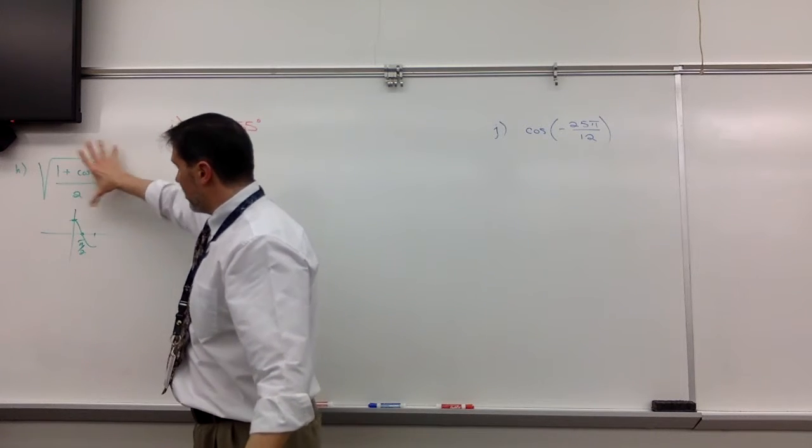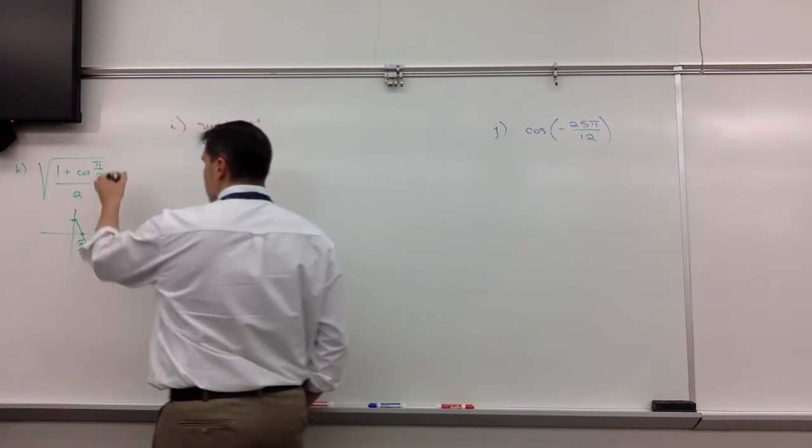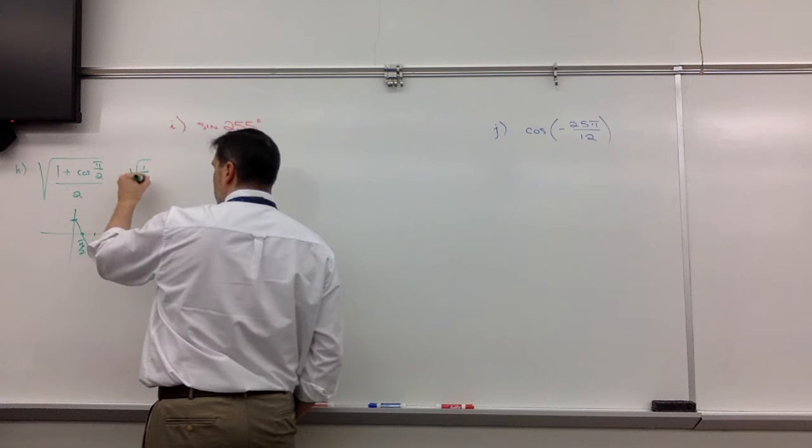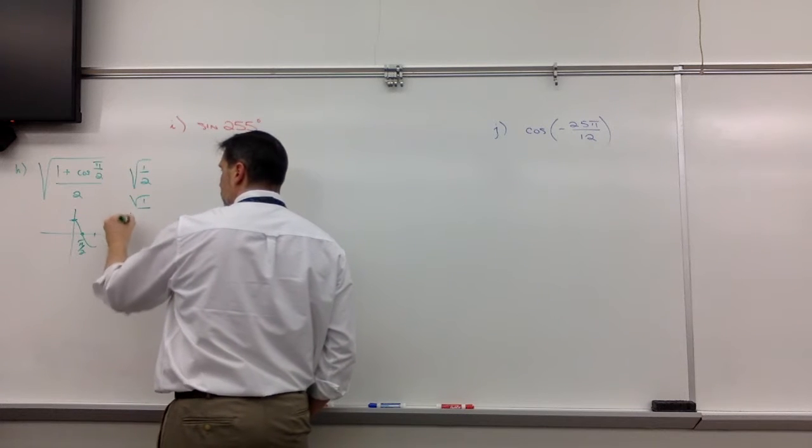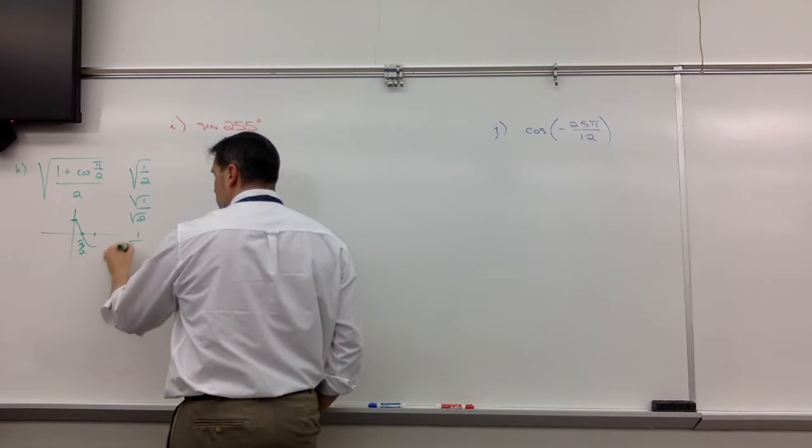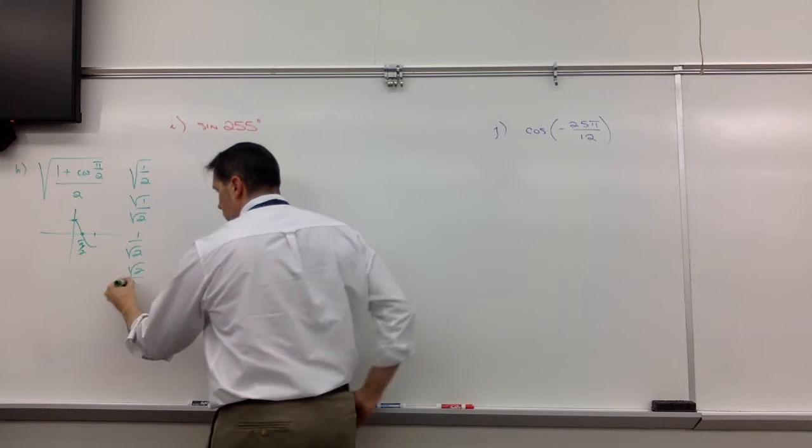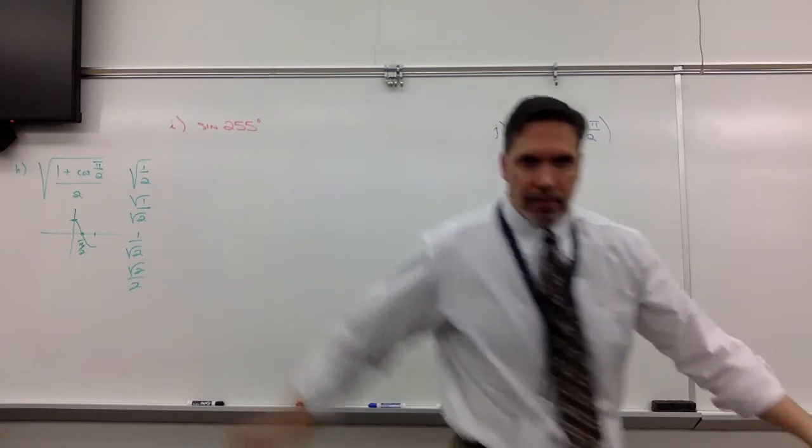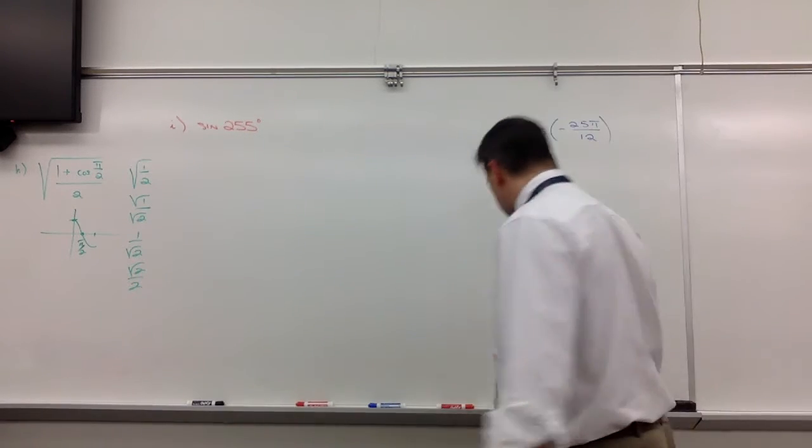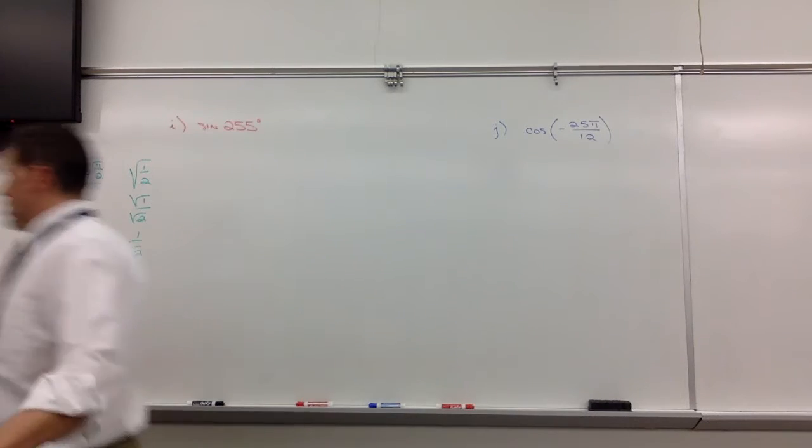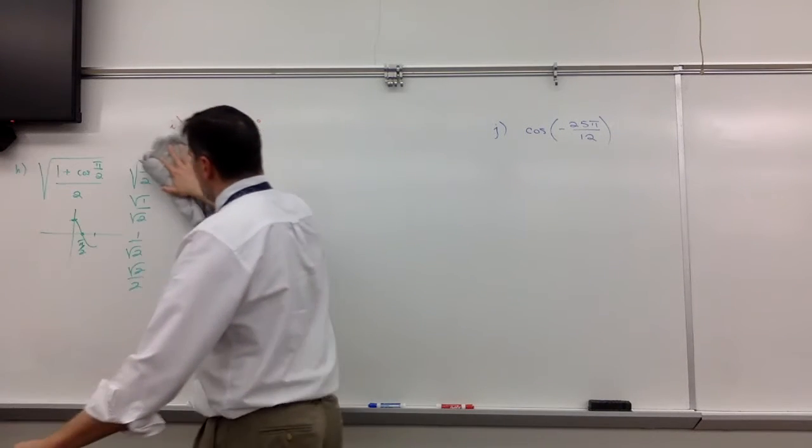So basically, you're taking the square root of a half. The square root of 1 over 2, that's the square root of 1 over the square root of 2, which is 1 over the square root of 2, which is the square root of 2 over 2. That is definitely one way to do this, but not the identity route.